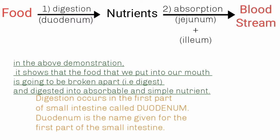Digestion occurs according to the first part of the small intestine called the duodenum. The duodenum is the name given to the first part of the small intestine.